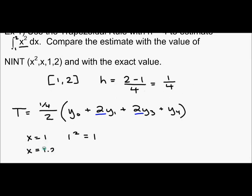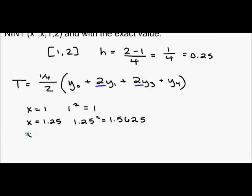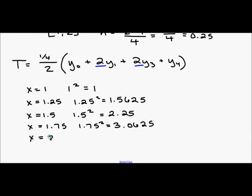Then I'm going to add a fourth to this. So I'm going to write this as 1.25 because 1 fourth is 0.25. And I have 1.25 squared, which is 1.5625. And then I'm going to add 1 quarter to this. So x is 1.5. 1.5 squared is 2.25. Add a fourth to this, square it, 3.0625. And my last part of my interval x is 2. 2 squared is 4.